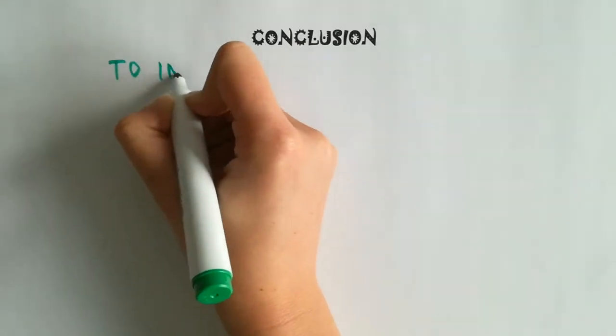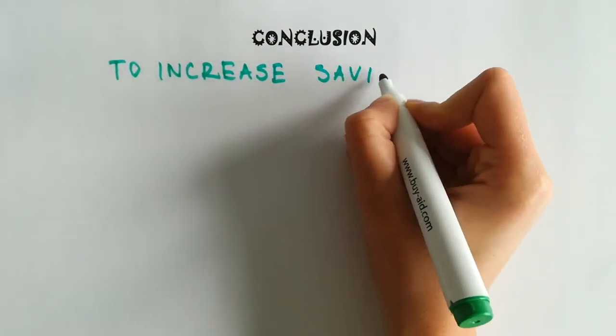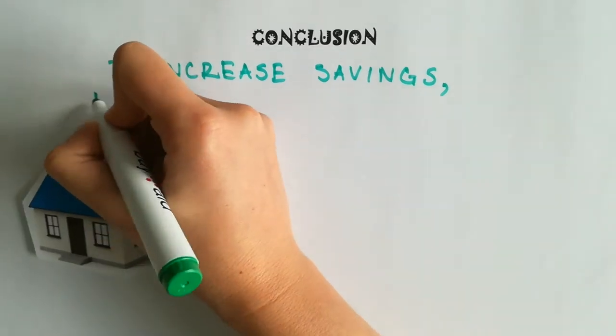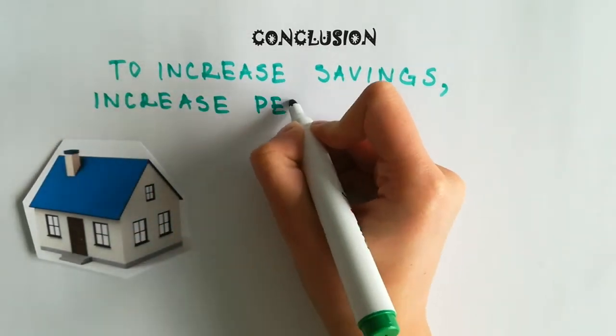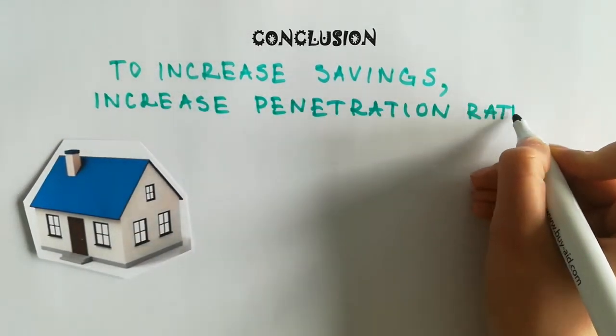So what could be a solution? Well, if we want to save water and energy, it's clear that we have to increase the number of households switching from doing their washing up by hand to using a dishwasher.